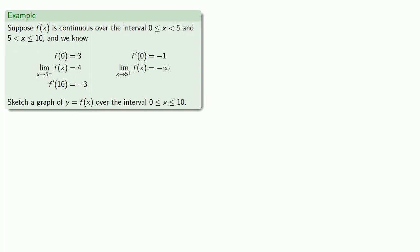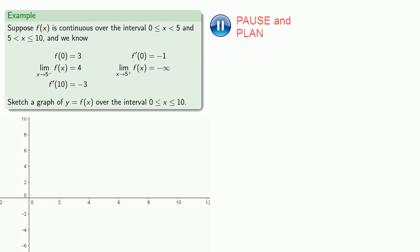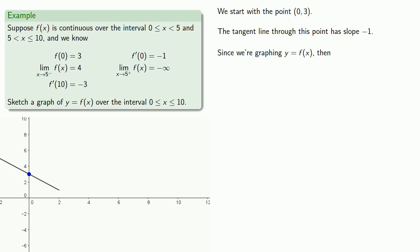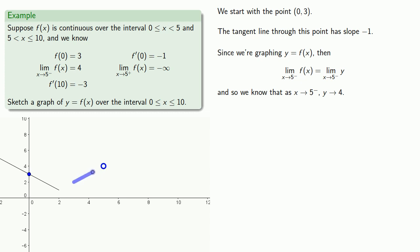We'll take a look at another example. Suppose f of x is continuous over the interval between 0 and 5, and between 5 and 10, but not including x equals 5. Suppose we have the following information. It's convenient to start with a point if we have that information, and we know the tangent line through this point has slope negative 1. Since we're graphing y equals f of x, any statement about the limit of f of x is a statement about the limit of y. We have information about the limit, and so we know that as x gets close to 5 from below, y gets close to 4. But we have to make no commitment as to what happens when x is actually equal to 5.